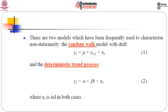There are two models which have been frequently used to characterize non-stationarity. One is the random walk model with drift, where changes in the variable depart by a constant factor mu from one time point to the next: y_t = mu + y_{t-1} + u_t, where mu is known as the drift factor. The other is the deterministic trend process, where y_t = alpha + beta*t + u_t, with u_t showing the random component and t the time component.